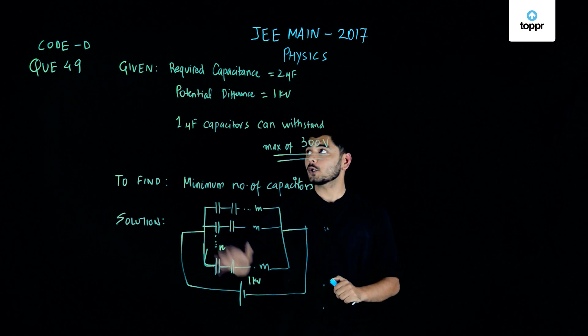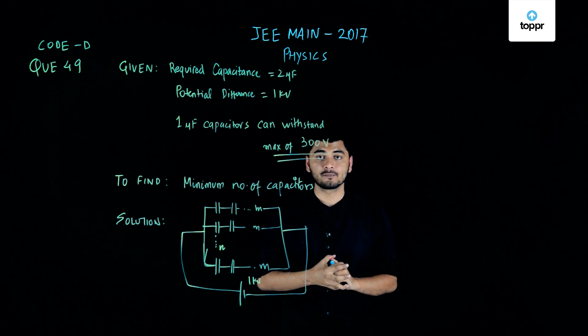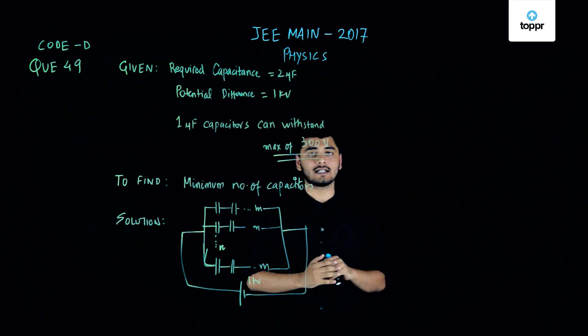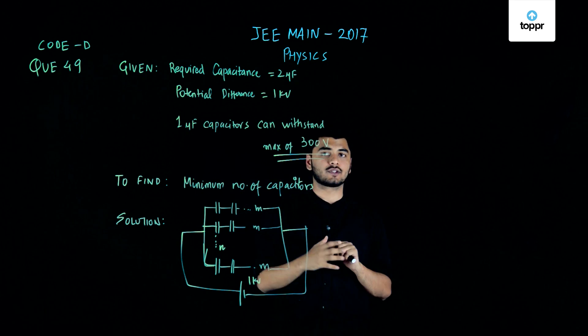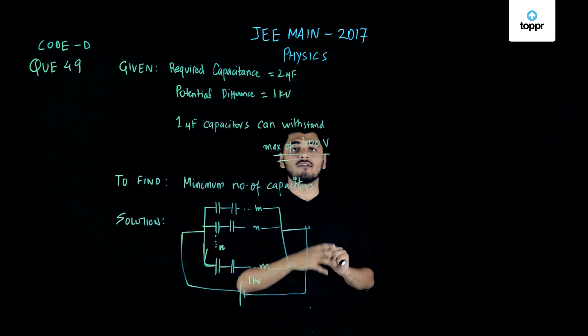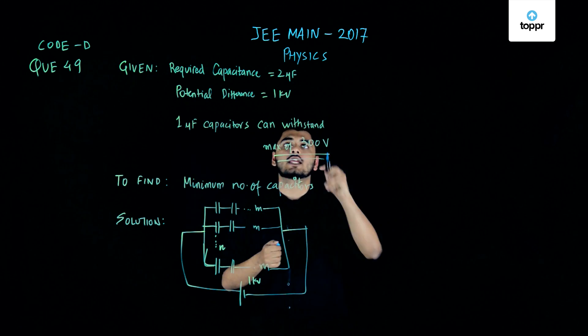Hello students. Moving on to question number 49 from code D. In this question, we have been given that we require a capacitance of 2 microfarad such that it can withstand a potential difference of 1 kilovolt, that is nothing but equals to 1000 volts.